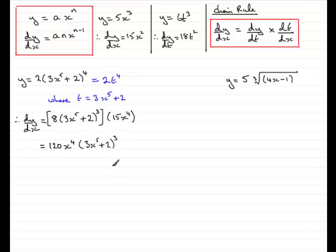Dead quick. Now I wrote this in blue because quite often I don't actually write this down. I just think it. I just say to myself y equals 2t to the 4. So what's the differential of 2t to the 4? Well it's 8t cubed. But I write my t in as 3x to the 5 plus 2.